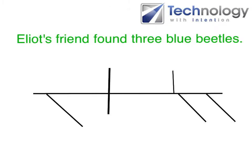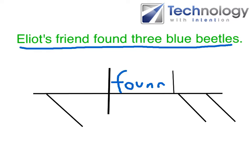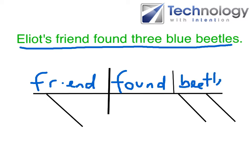This is an example of using flipped instruction in a language arts classroom. We're going to diagram the following sentence: Elliot's friend found three blue beetles. Starting with step one — the verb is 'found,' and the subject is 'friend.' The object is 'beetle.' We can look for possessives, using punctuation that suggests possession — that's Elliot's friend. Finally, there are adjectives describing what was found: three blue beetles.